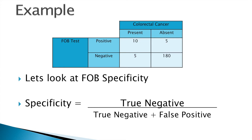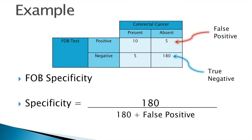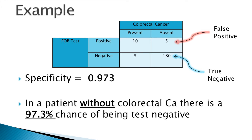Now let's consider the specificity of the test. We know that specificity equals the true negatives divided by the true negatives plus the false positives. We identify the true negatives — 180 patients — and the false positives, putting them into our equation. This gives us 180 divided by 185, yielding a calculated specificity value of 0.973, which means that in a patient without colorectal cancer there is a 97.3% chance of being test negative.